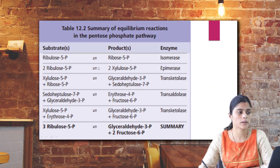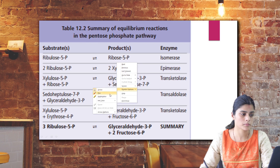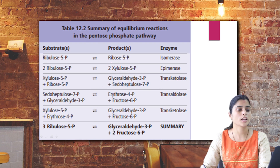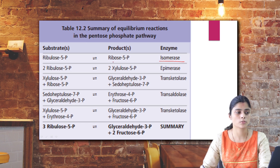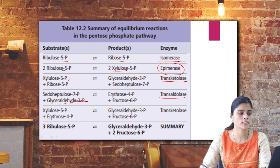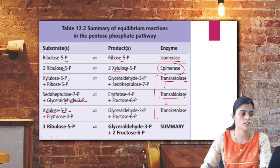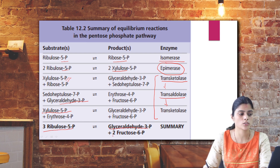In summary: ribulose 5-phosphate is converted to ribose 5-phosphate by isomerase (they are isomers), while ribulose and xylulose are epimers differing at only one carbon. Transketolase catalyzes keto sugars such as xylulose 5-phosphate, and transaldolase catalyzes aldose sugars such as glyceraldehyde 3-phosphate. The sequence is transketolase, transaldolase, then transketolase again, and 3 ribulose 5-phosphate yields glyceraldehyde 3-phosphate and 2 fructose 6-phosphate.